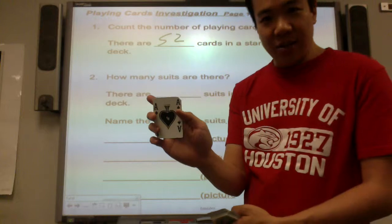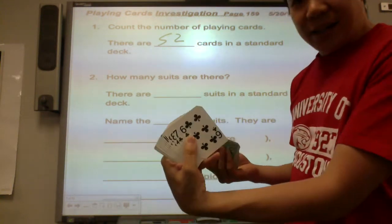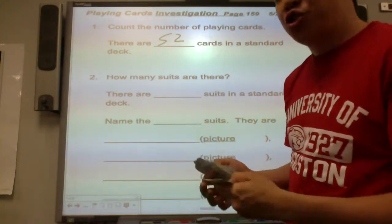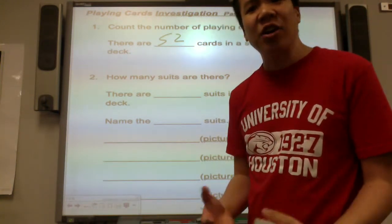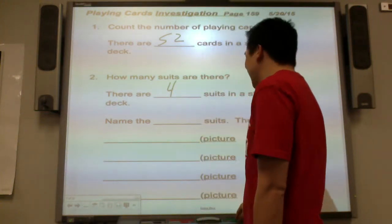I count there are 52 playing cards in a standard deck. How many suits are there? Let's see. I see this one, this suit, this suit, and this suit. Suits are categories. How many types of categories do you see? I see there are four suits in a standard deck.